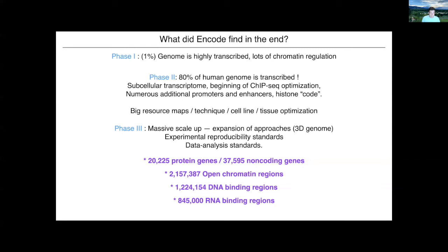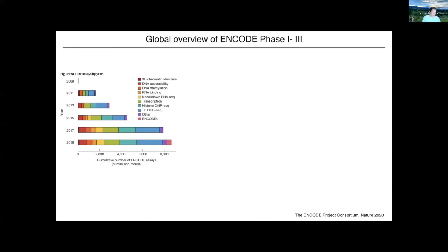There are 845,000 RNA binding regions — another important part of biology is where proteins bind onto RNA, and that's another huge resource. By the end of the class, we're going to start to think about all these resources and how we can integrate them together. There are also over 130,000 long-range interactions in the DNA in ENCODE's release, covering how the genome folds into three dimensions. The great thing is these numbers are huge but ENCODE did a great job of making them very easily available.